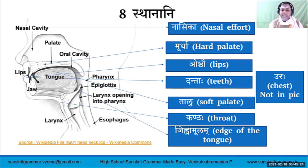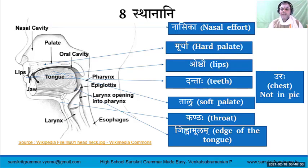Which are these eight Sthanani? The first sthana is the Nasika, the nose. Murdha is the hard palate. Oshtav are the lips. Dantaha are the teeth. Talu is the soft palate. Kanta is the throat. Jihvamula is the edge of the tongue on the other side. What is not shown in the diagram is Uraha — in Pratishakya, the Vedic grammar, they talk about Uraha. These eight Sthanani are the sthanas recognized by our science of phonetics.